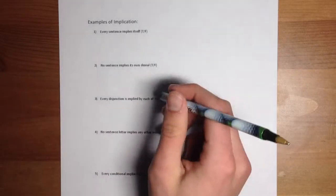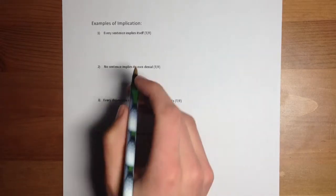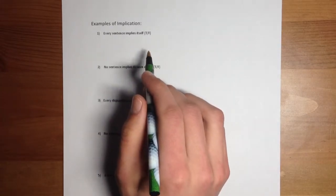Alright, so we can look at some examples of implication. First one we're going to look at is every sentence implies itself, true or false.